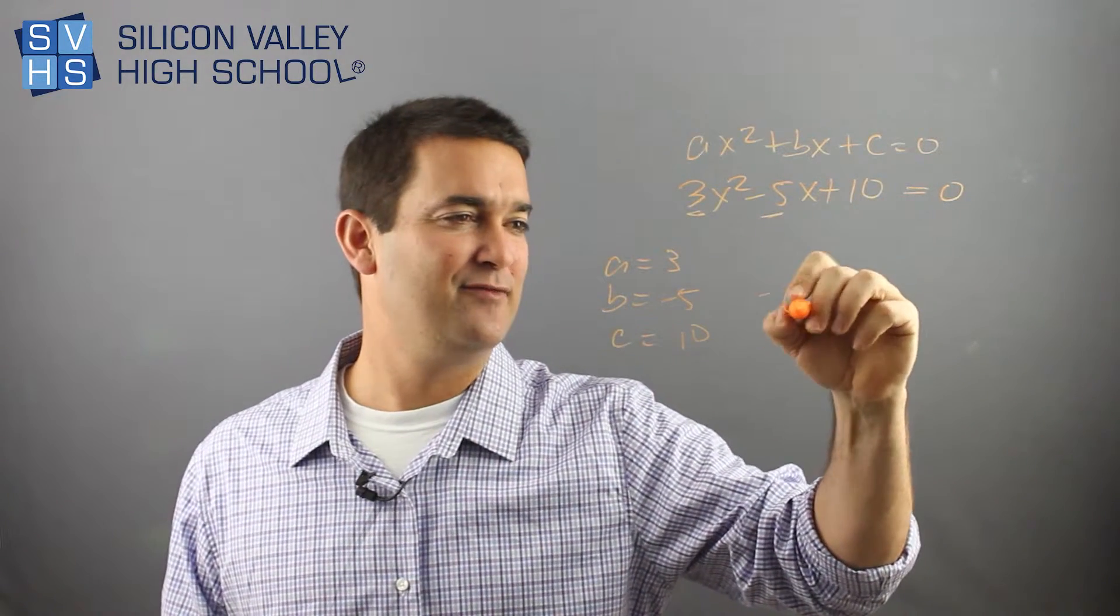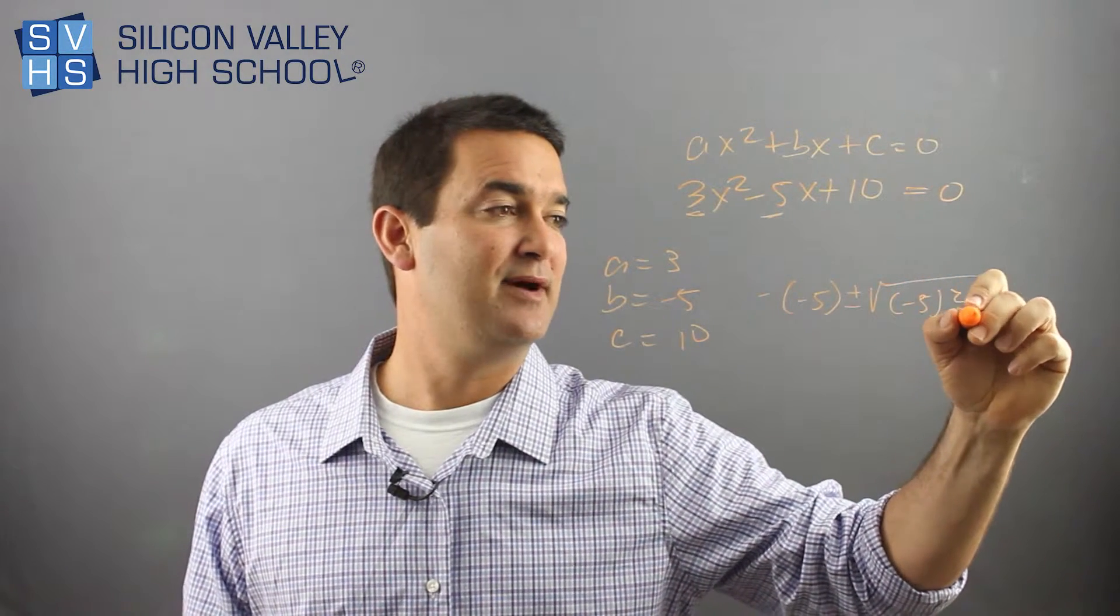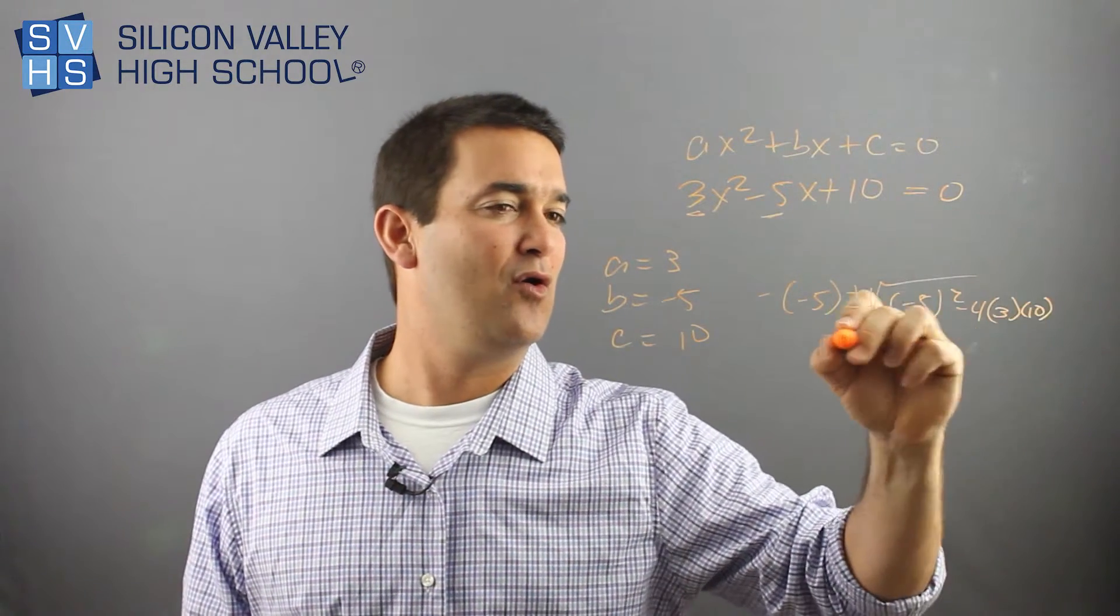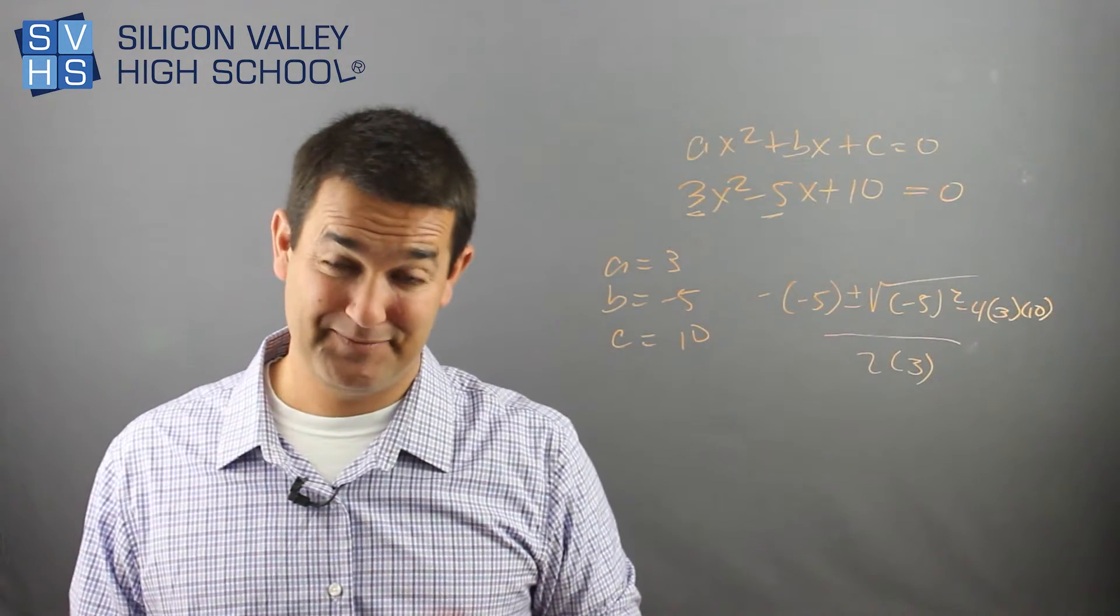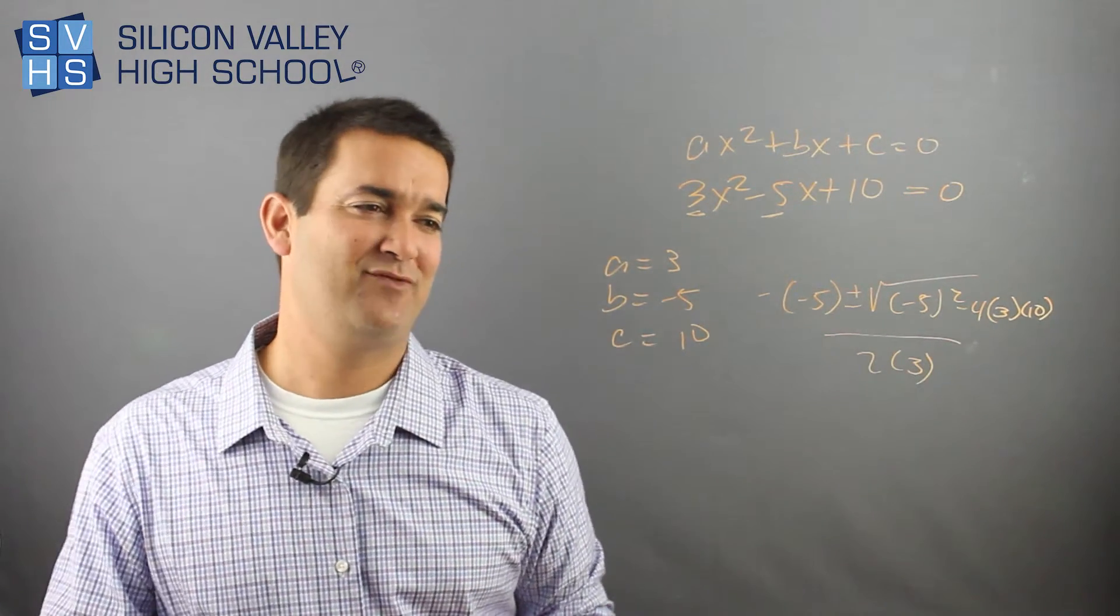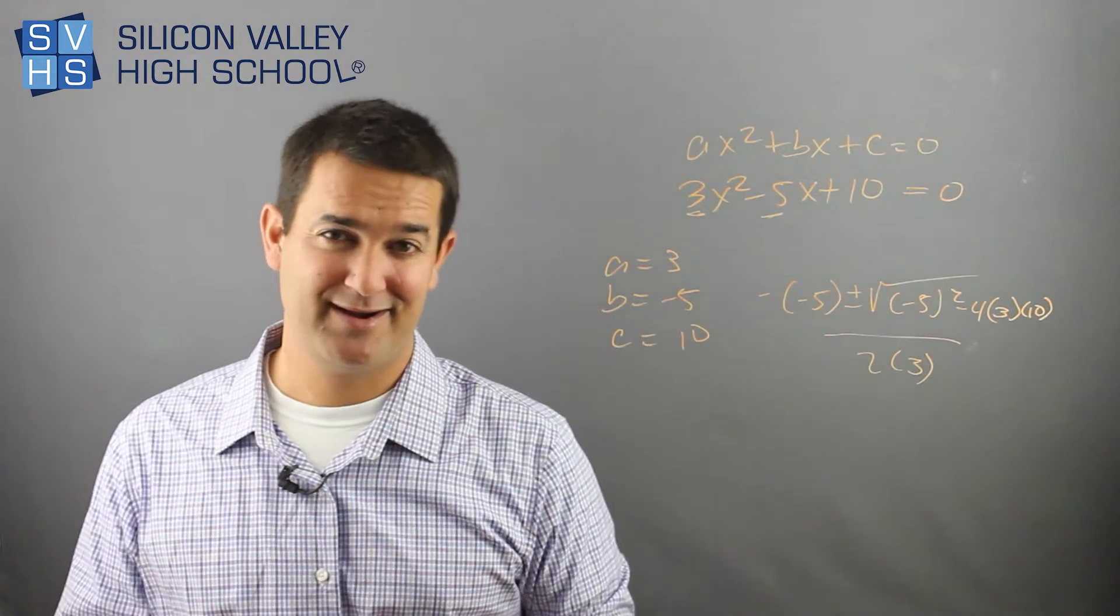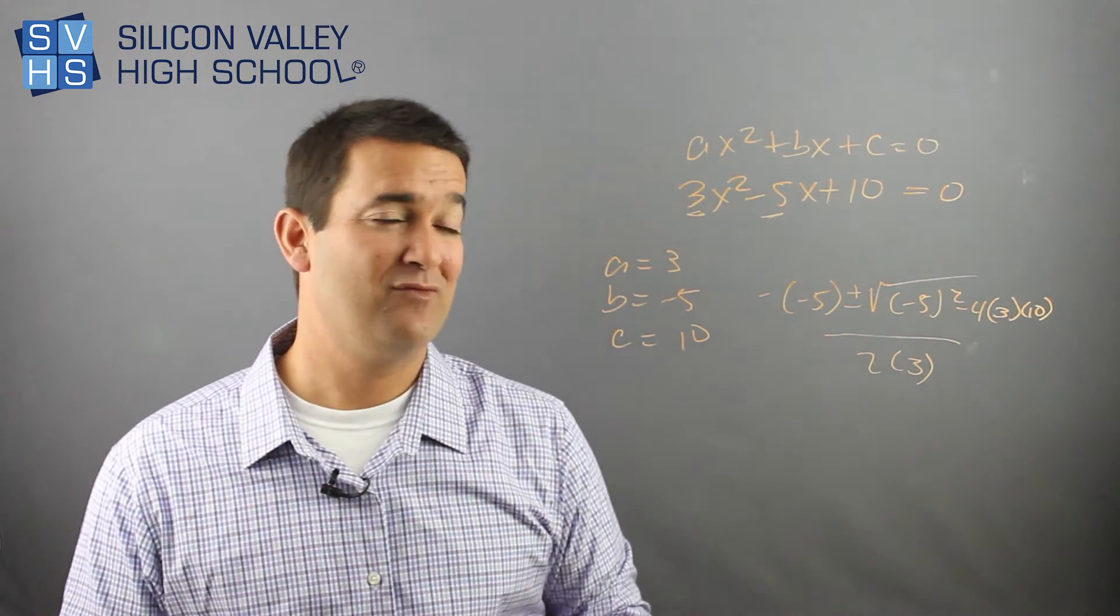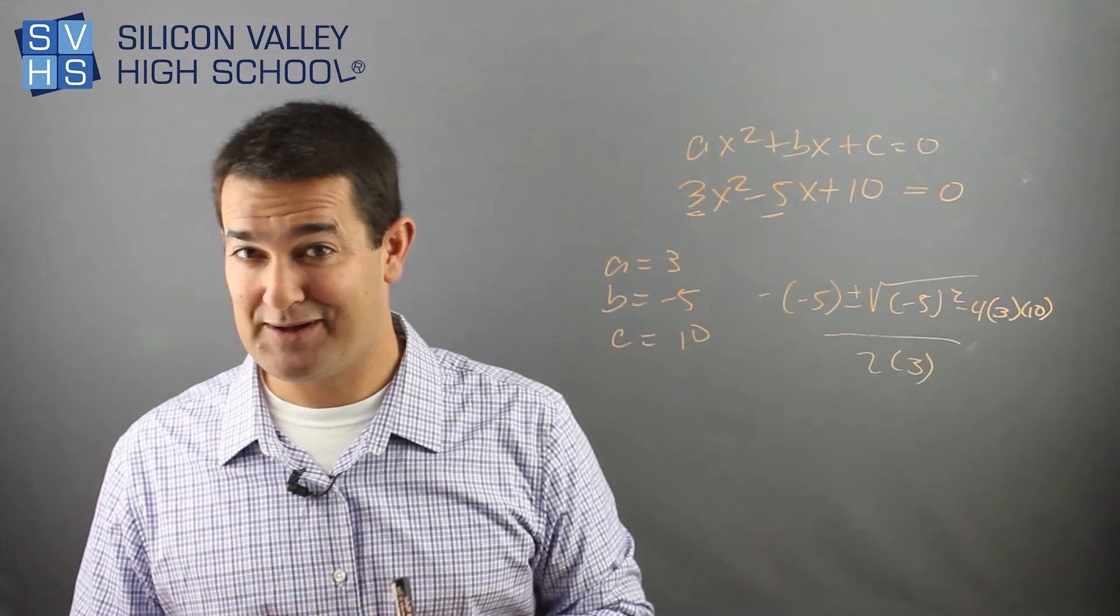But then you'd have b squared minus 4, blah blah blah. So you'd have negative negative 5 plus or minus negative 5 squared minus 4 times ac, so 3 times 10, all over 2 times a, which is that. And then you take your time, don't mess up, don't make a bunch of adding errors and stuff, and then you're done. So that's the quadratic formula. I don't really know why it has the worst reputation in America. I guess it is kind of tedious and pretty annoying, but it is a way to solve a trinomial when you cannot factor.